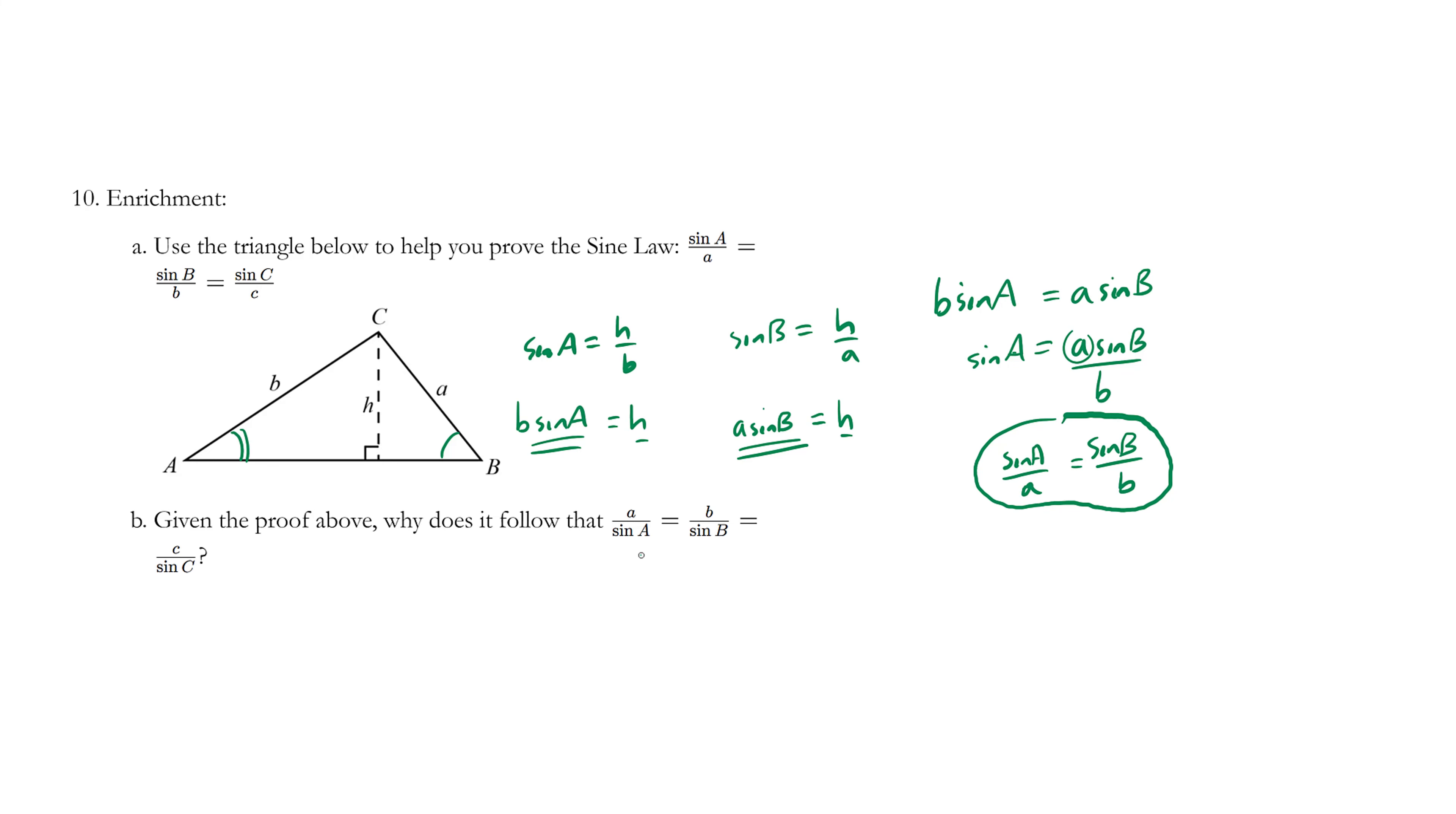So assuming that you took the time to prove this, why is it true that the reciprocal is true? Let's look at one example. For example, sine A over A is equal to sine B over B. In math, you're allowed to do the same thing to both sides, including take the reciprocal of both sides. So A over sine A equals B over sine B.